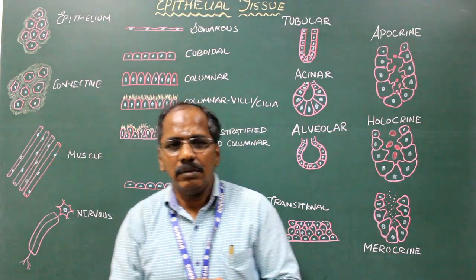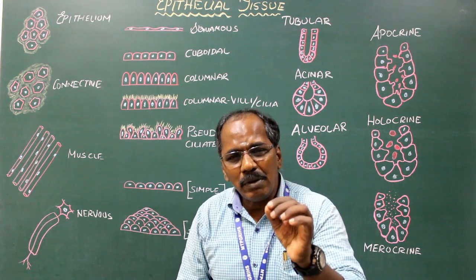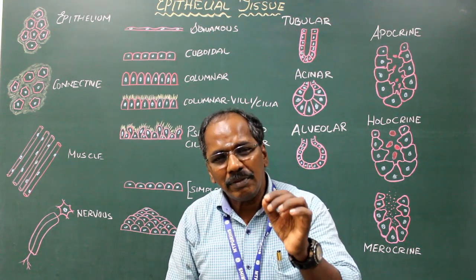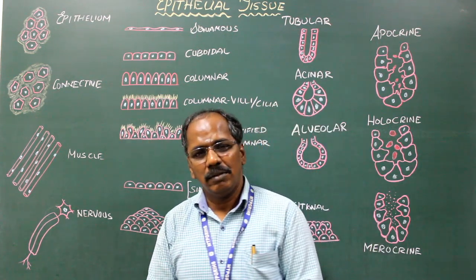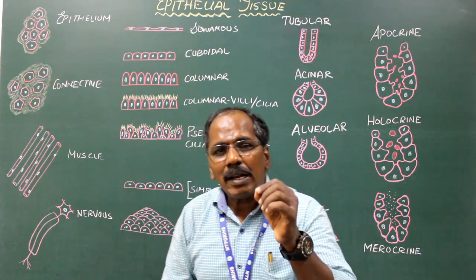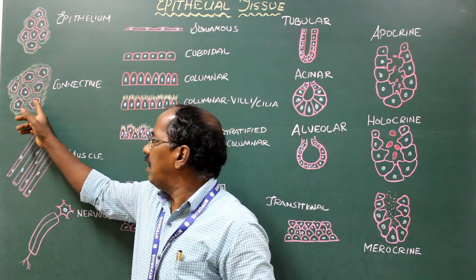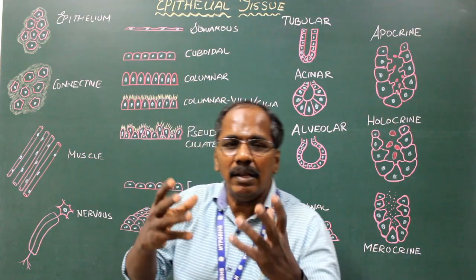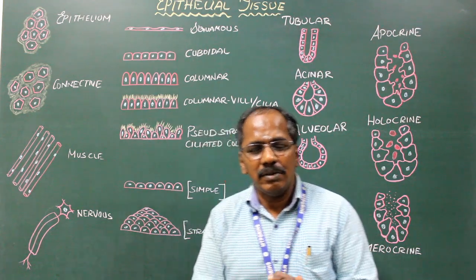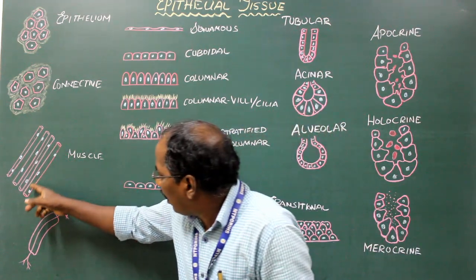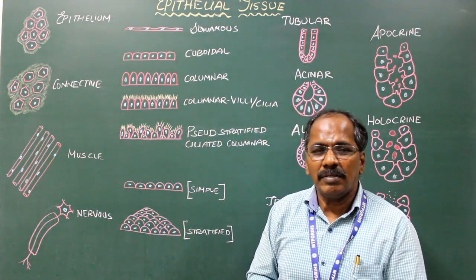Connective tissue is tissue that protects, supports, and forms the structure for other tissues or organs. It is characterized by the presence of an abundance of intercellular substance between the cells — much more than in epithelial tissue. Muscle tissue consists of elongated fibers with the specialized function of contraction.